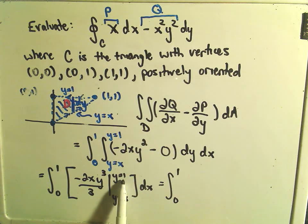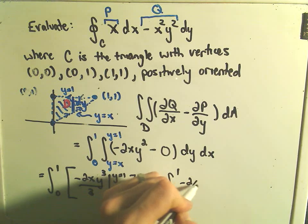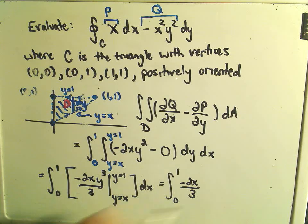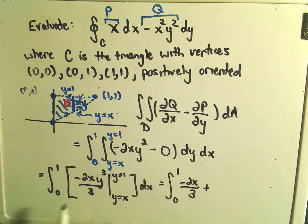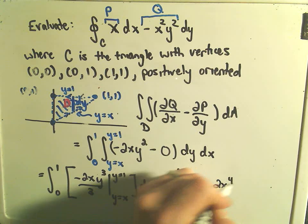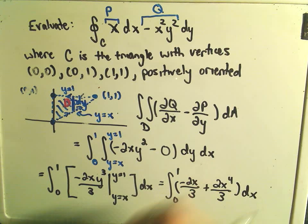If we plug in the upper limit, y equals 1, we'll get 1 cubed, which is 1, so we'll get negative 2x over 3. We'll subtract away the lower limit, which will give us a positive. When we plug in x, it looks like we'll get 2x to the 4th, again over 3. And that's what we have to integrate now with respect to x.